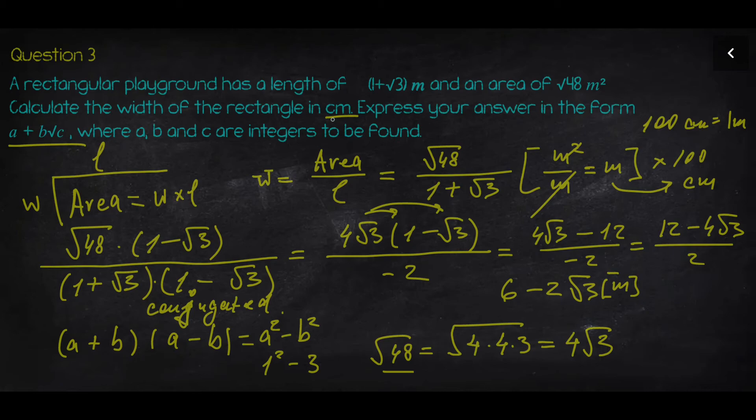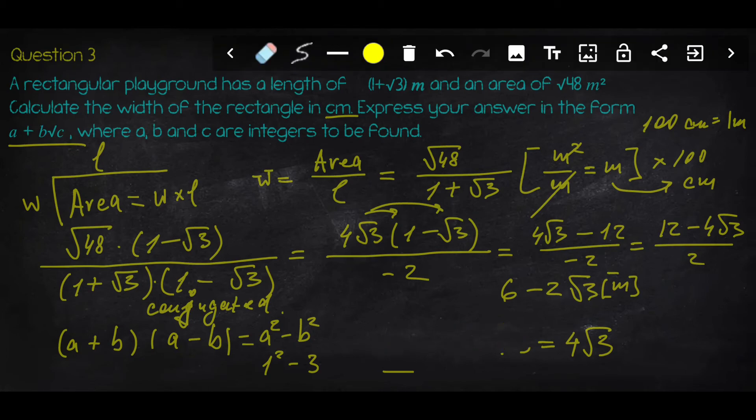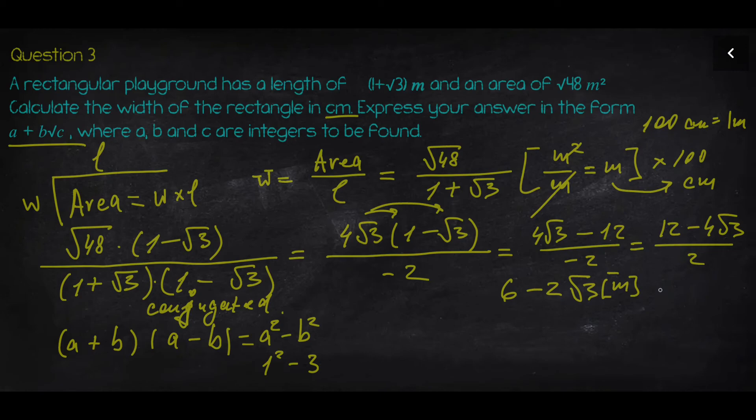We need to multiply this expression by 100 to convert into centimeters. We multiply everything by 100, so we'll get 600-200√3. Now we have the answer in centimeters, and we're able to compare with the final expression where a, b, and c need to be found.